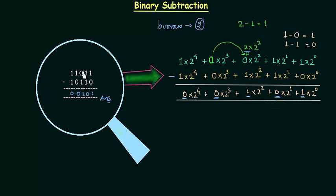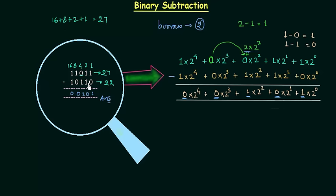You can cross check your answer. The first binary number 11011 is 27 in decimal, and the second binary number 10110 is 22 in decimal. To convert, you add the weights: 1, 2, 4, 8, and 16. For the first number we have 16 plus 8 plus 2 plus 1, giving 27. We don't have 4 because we have 0 on that position. For the answer 00101, we have 4 plus 1, which is 5. So when you subtract 22 from 27 you get 5, confirming our answer is correct.